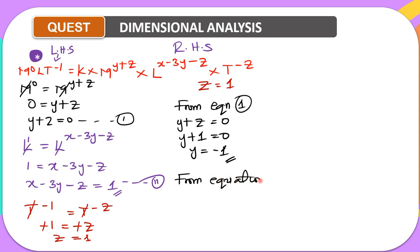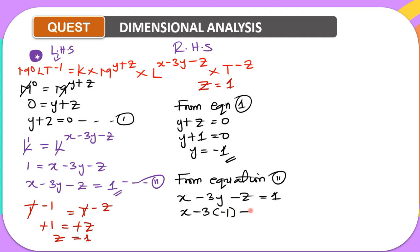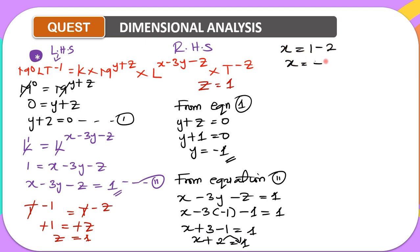From equation two, x minus three y minus z equals one. Substituting y equals minus one and z equals one: x minus three times minus one minus one equals one, which gives x plus three minus one equals one, so x plus two equals one, and therefore x equals minus one. So we have found x equals minus one, y equals minus one, and z equals one.